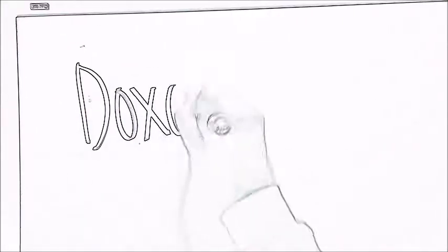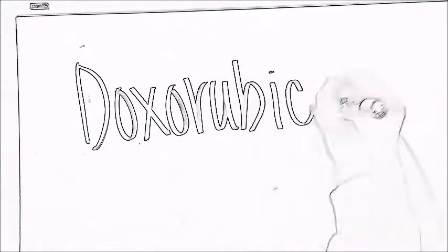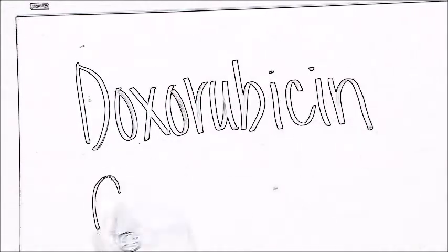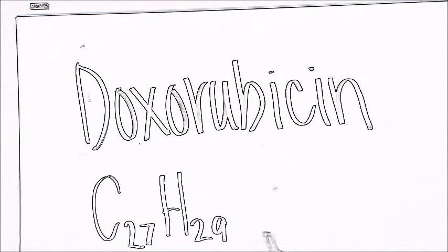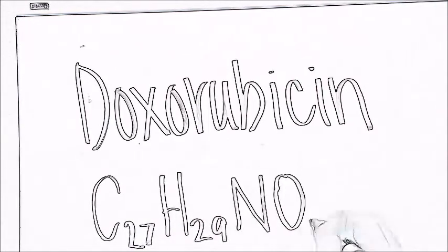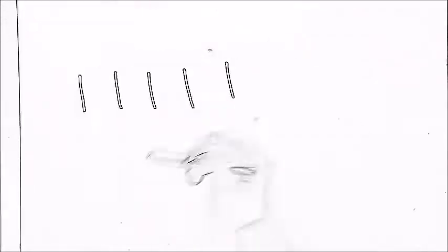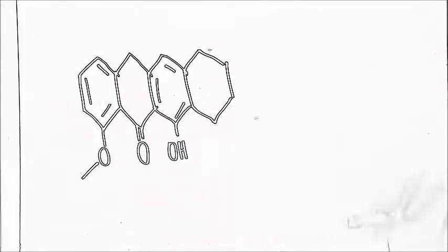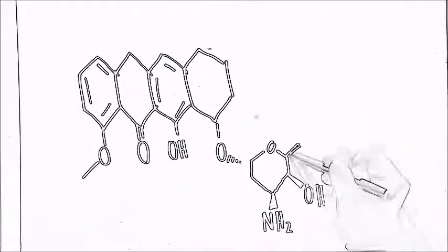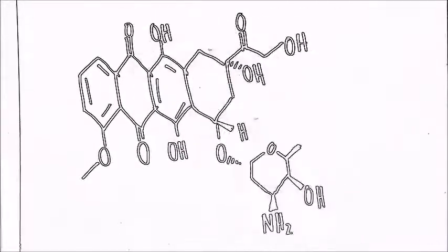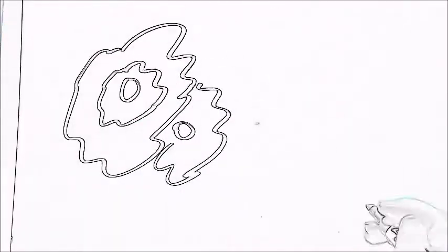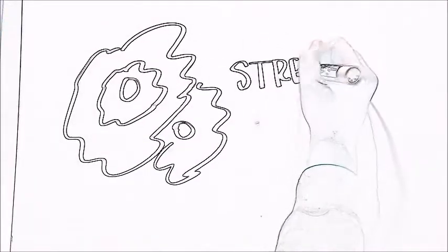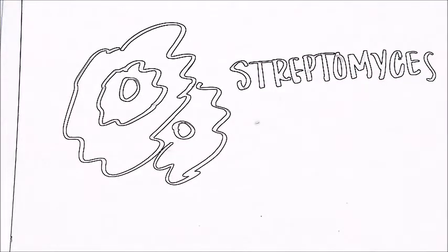The other drug we're going to talk about is doxorubicin. Doxorubicin is a combination of carbon, hydrogen, and nitrates. It is made from a natural product produced by the soil fungus streptomyces.